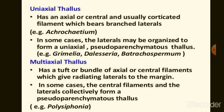Next, thallus organization. The thallus organization may be of two types: uniaxial thallus and multiaxial thallus. Uniaxial thallus means there is a single central or axial filament which gives out well-branched laterals. This is generally seen in Batrachospermum. Multiaxial thallus means there is a mass of central or axial filaments, and each filament gives out lateral branches. This is seen in Polysiphonia.